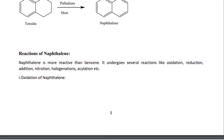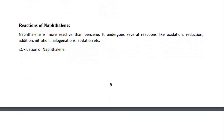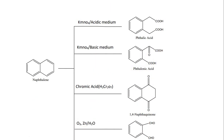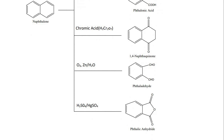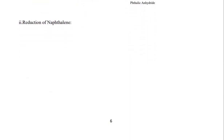Naphthalene is more reactive than benzene and undergoes several reactions including oxidation, reduction, addition, nitration, halogenation, and acylation. In the presence of K-permanganate in acidic medium, phthalic acid forms. In basic medium, phthalonic acid forms. In the presence of chromic acid, 1,4-naphthoquinone forms. In the presence of ozone and zinc/water, phthalaldehyde forms. With sulfuric acid and mercuric sulfate, phthalic anhydride forms.